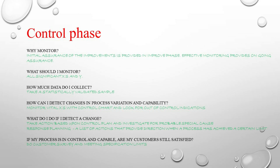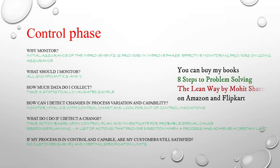The next question is: what should I monitor? We need to monitor all significant X's and the project Y. Y is a function of X, and we need to control all significant X's impacting the project Y. We also need to monitor Y because there could be any other X that might start impacting Y over time that we are not currently monitoring. Monitoring Y gives us that indication.